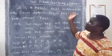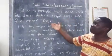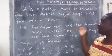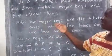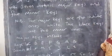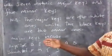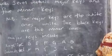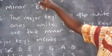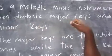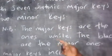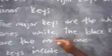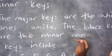So it is a melodic music instrument with seven diatonic major keys and five minor keys. Note: the major keys are the white ones, and the black keys are the minor ones. I've said the keyboard has got seven diatonic major keys, which are the white ones. And the black keys are the minor ones.